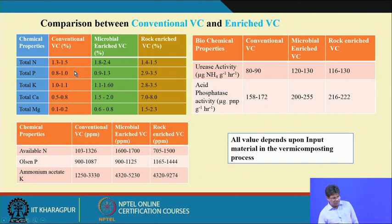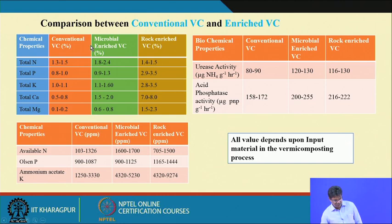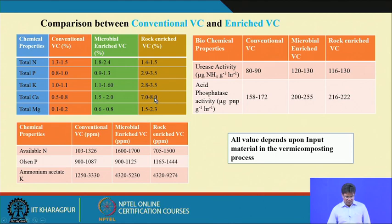For potash, conventional vermicompost gives 1.0–1.1%; with microbial enrichment a small improvement to 1.1–1.6%; with rock mineral enrichment, potash increases significantly to 2.8–3.5%. For calcium, conventional vermicompost gives 0.5–0.8%; with microbial enrichment 1.5–2.0%; with rock enrichment a significant improvement of 7–8%. For magnesium, conventional vermicompost gives 0.1–0.2%; microbial enrichment gives 0.6–0.8%; rock enrichment gives 1.2–2.3%. Rock minerals and microbial inoculations can be mixed together for enriched vermicompost preparation.